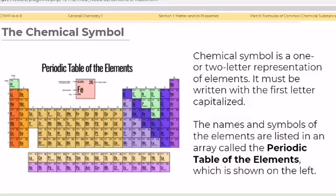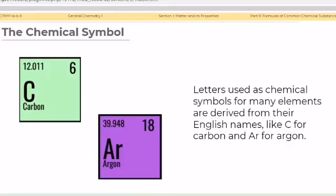Chemical symbol is a one or two-letter representation of elements. It must be written with the first letter capitalized. The names and symbols of the elements are listed in an array called the periodic table of the elements, which is shown on the left. Letters used as chemical symbols for many elements are derived from their English names like C for carbon and AR for argon.